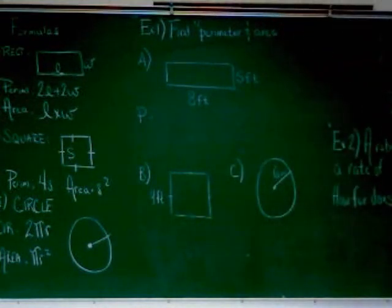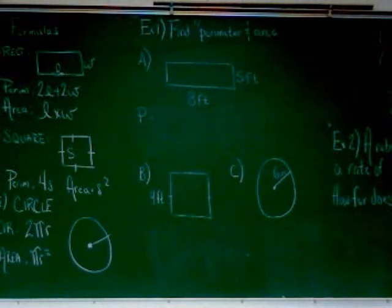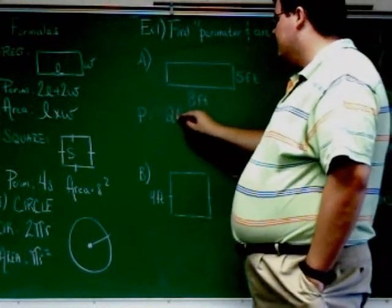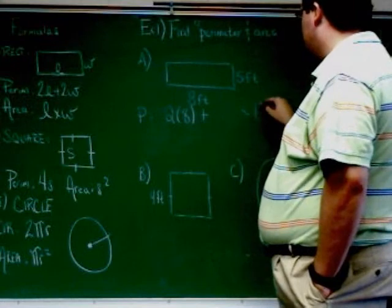First thing we have to do is multiply together 2 and the length. And again, the length is the one going across. So, what's the length of the rectangle in part A? The whole thing equals 16, but the length here is just 8.